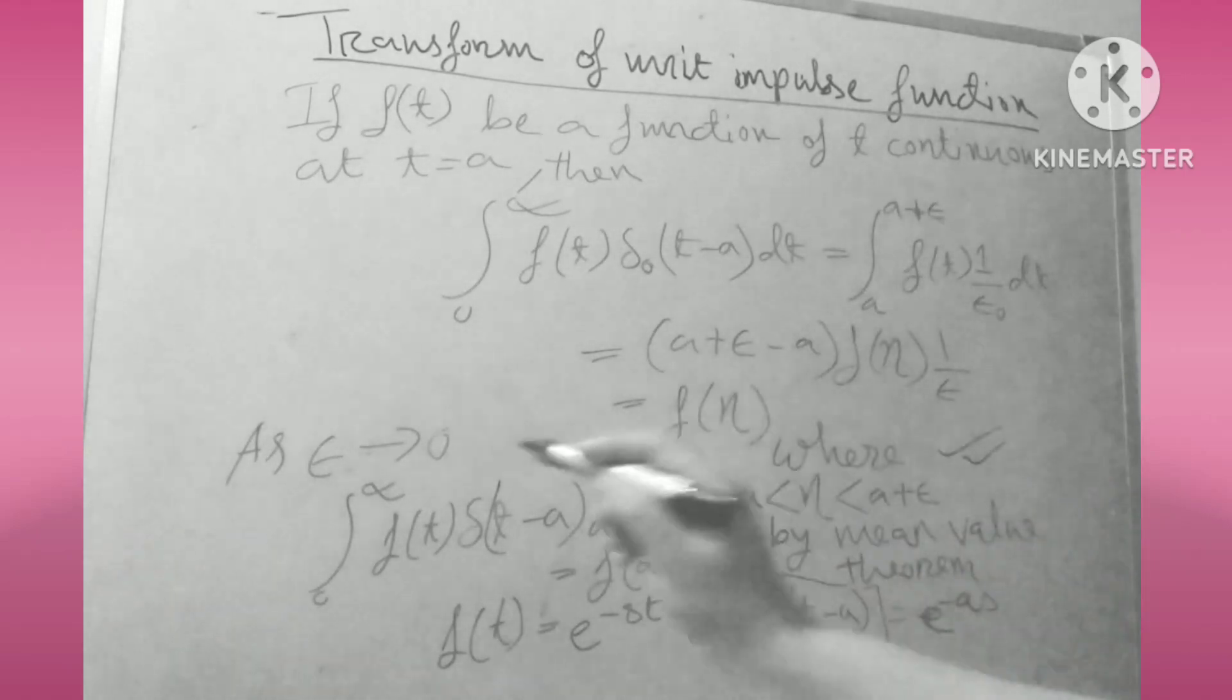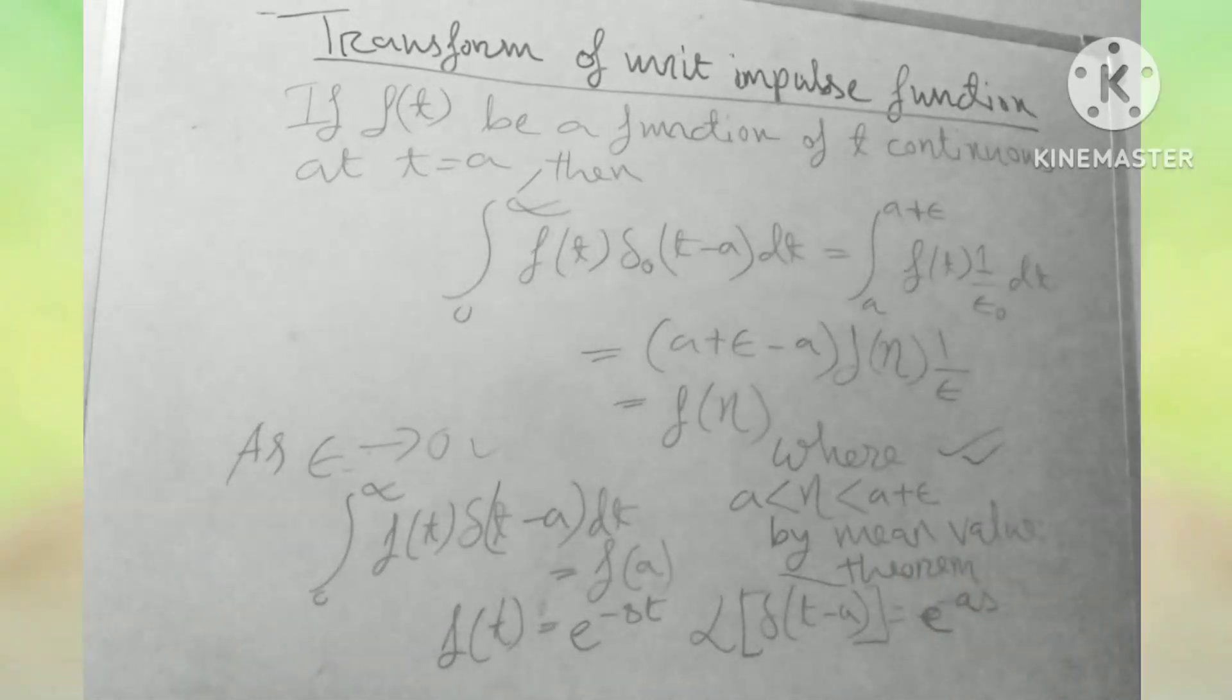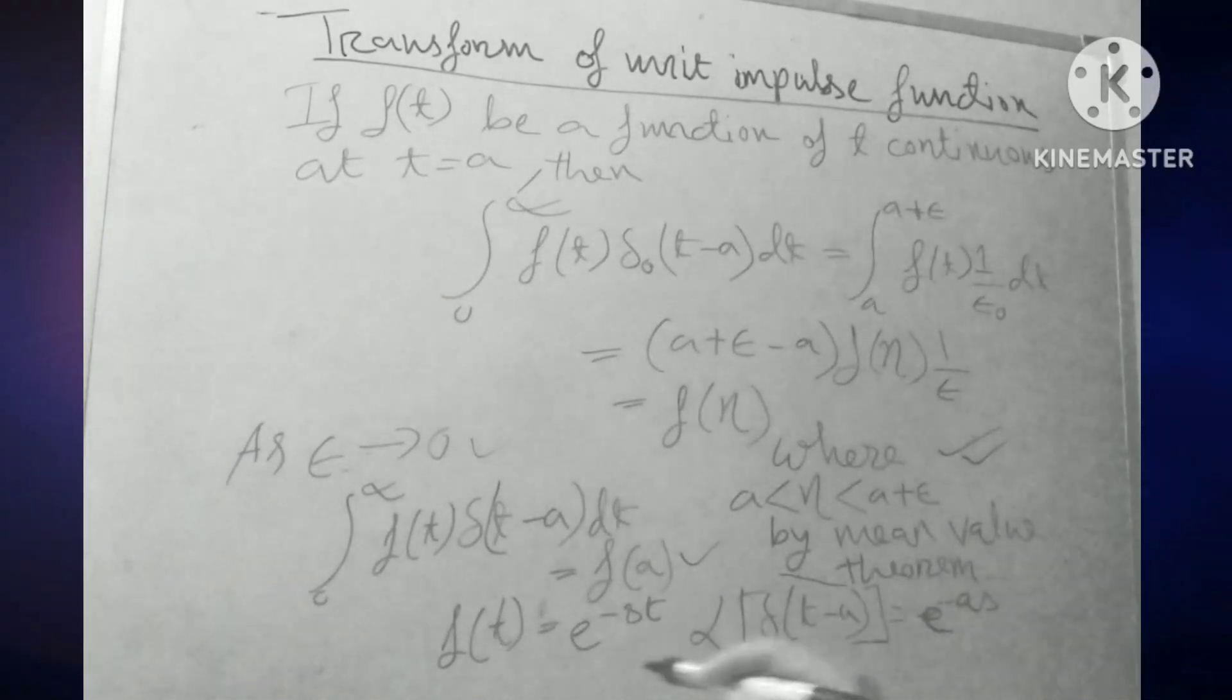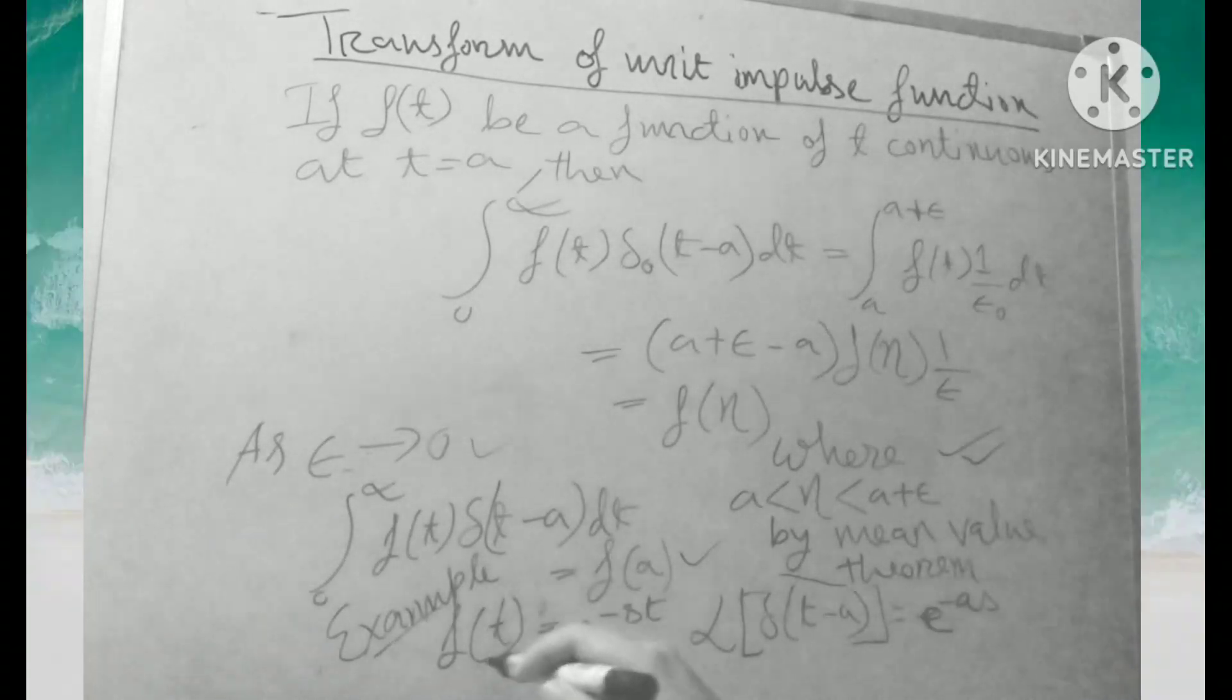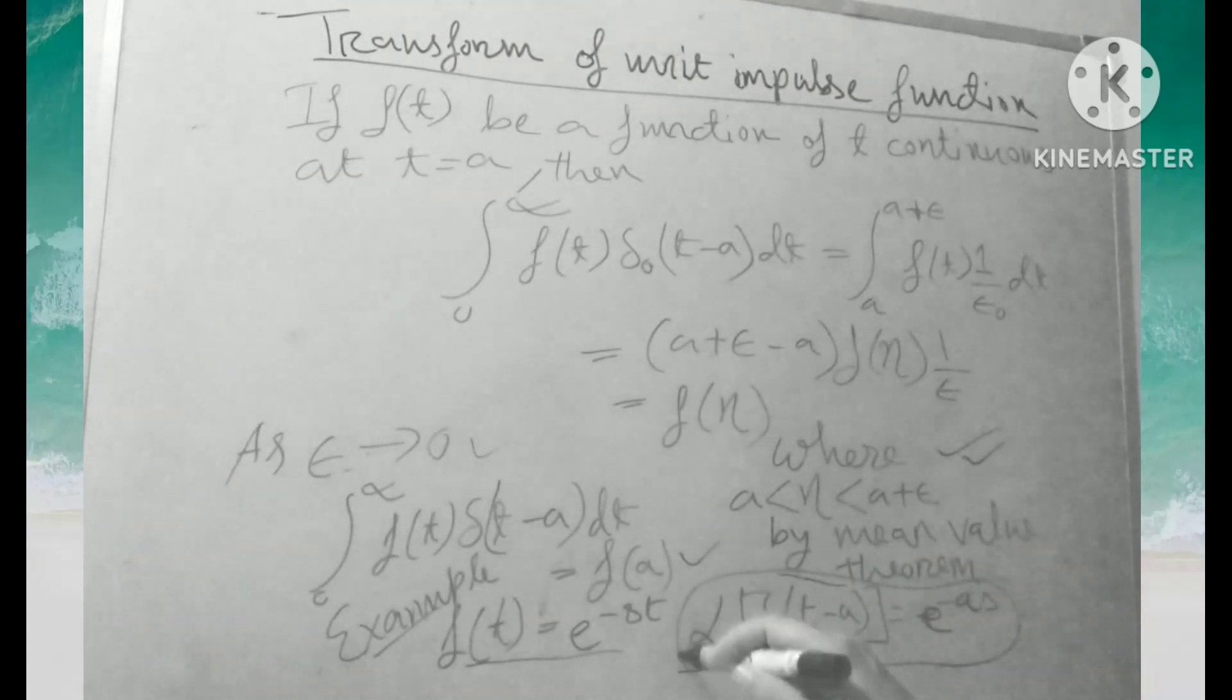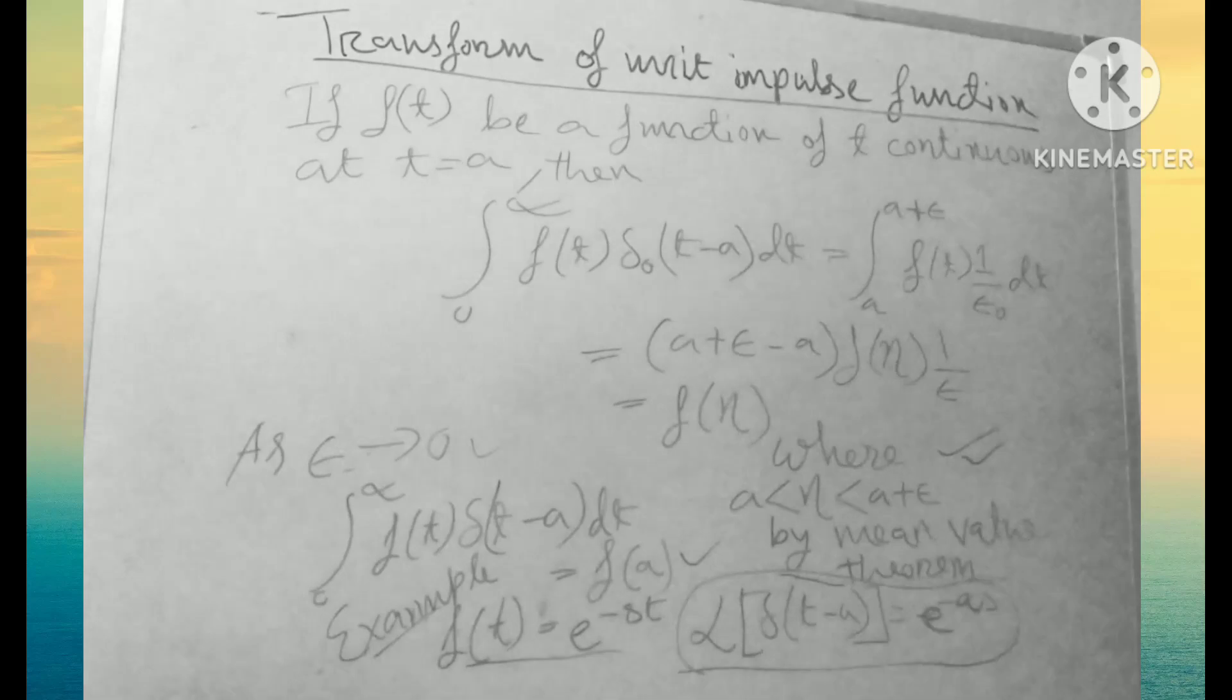As epsilon tends to zero, we get f of a. So for example, if f of t equals e to the power minus at, the Laplace transformation of del t minus a equals e to the power minus a. This is a very important formula, friends.